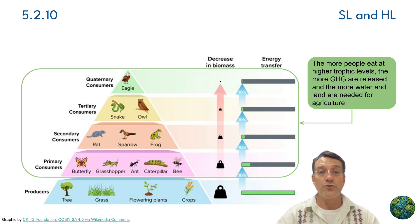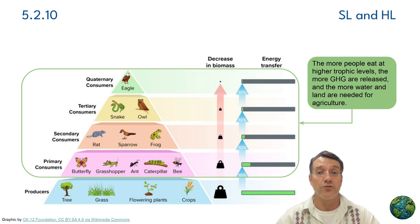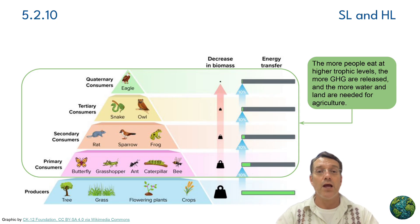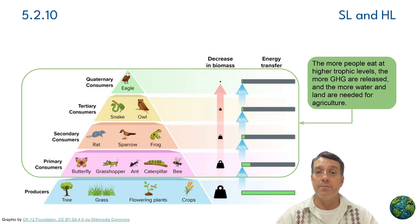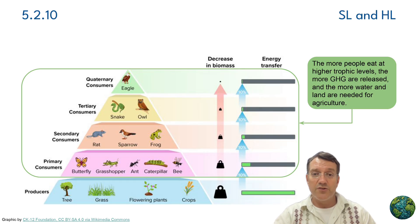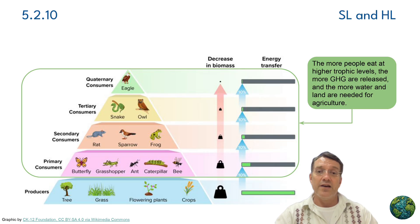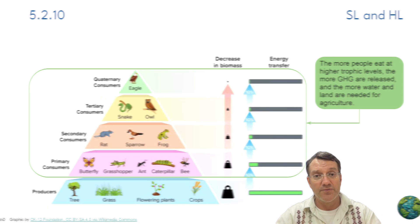This diagram shows the resource implications of eating at different trophic levels. The higher up the food chain we eat, the more greenhouse gases are released, and the more water and land are needed for agriculture. This doesn't mean everybody needs to become vegetarian, but understanding these relationships can help you make more informed dietary choices.